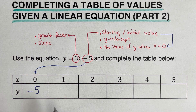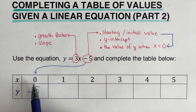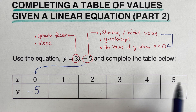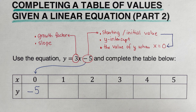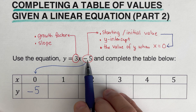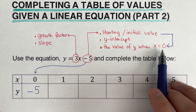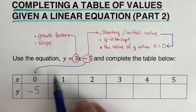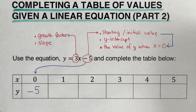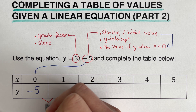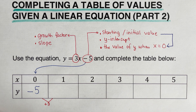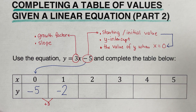To determine the rest of the values, we need to make sure the interval of x goes by 1 — so 0, 1, 2, 3, 4, 5. If the interval were 0, 2, 4, 6 it would not work. The initial value when x equals 0 is negative 5. The growth factor is 3, meaning we add 3 each time, so negative 5 plus 3 gives us negative 2 as the next value.